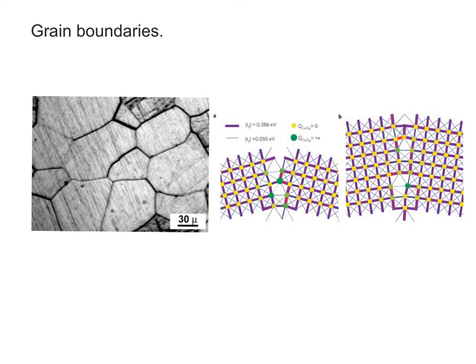There are different atoms, the yellow ones and green ones, that sit in the lattice. As crystals or materials are compressed together, they form boundaries with one another called grain boundaries.